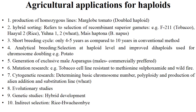Third is shortening the breeding cycle. Only 4 to 5 years will be taken in haploid production compared to 10 years in conventional methods. Fourth is analytical breeding — selection at haploid level and improved diploid haploids used for chromosome doubling. Fifth is generation of exclusive male asparagus, because males are commercially preferred in asparagus due to their showy and wide leaf farming habit.